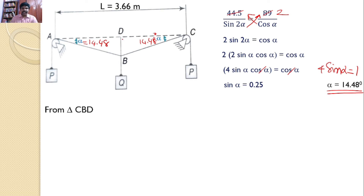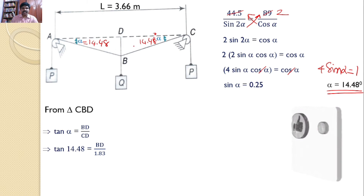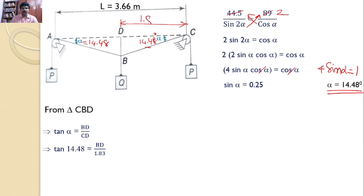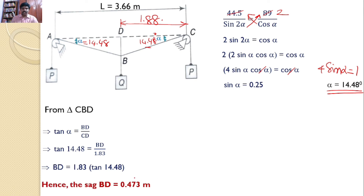Now, from the right-angle triangle CBD, tan(alpha) equals BD divided by CD. Since both angles are equal at 14.48 degrees, point D is exactly at the midpoint, so CD equals half of L, which is 1.83 m. Therefore BD equals 1.83 times tan(14.48°), giving a sag BD equal to 0.473 meters.